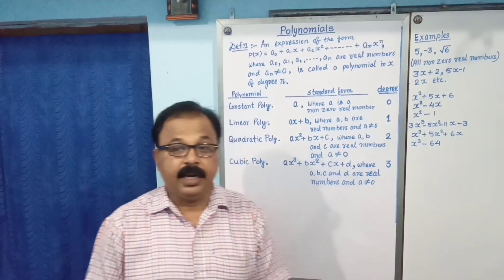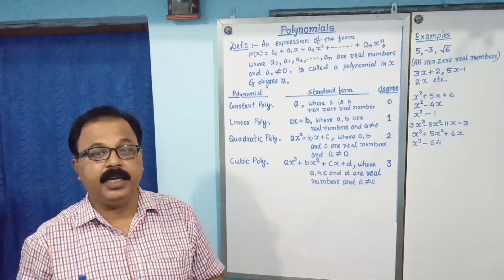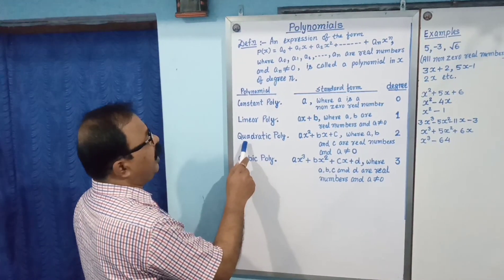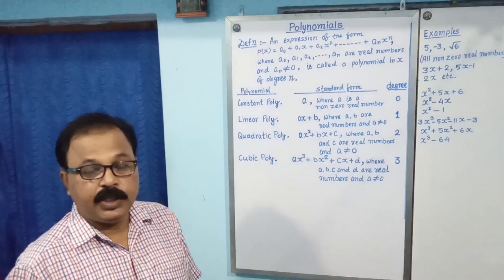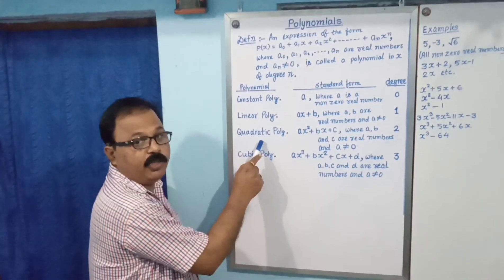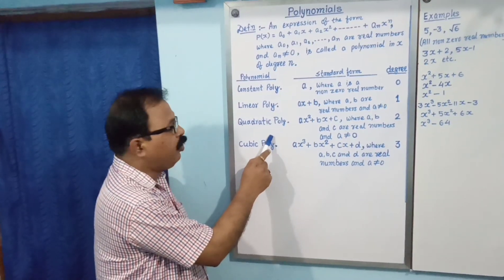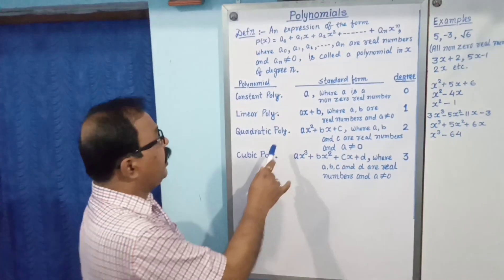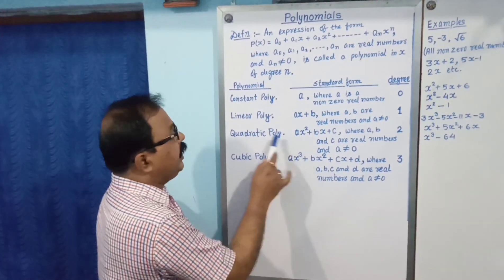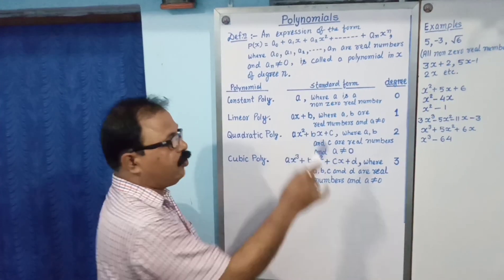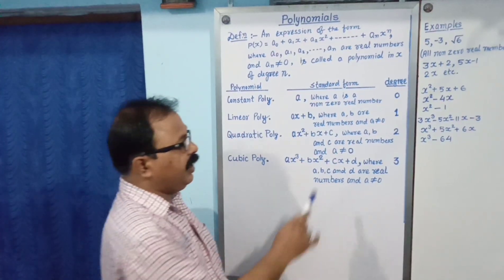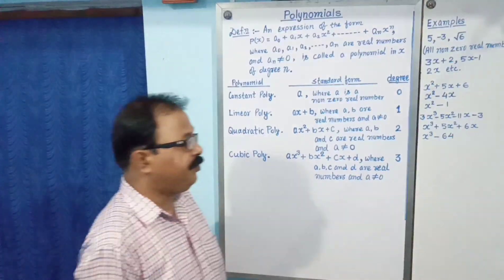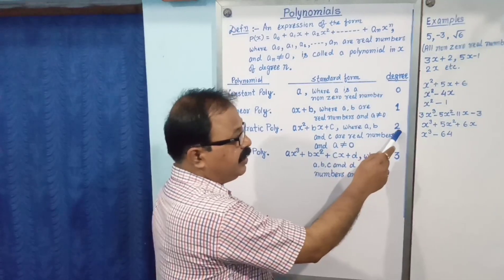What is degree of polynomial? The highest degree of a polynomial is called degree of polynomial. Another polynomial, quadratic polynomial. You have to study that type of polynomial. Quadratic polynomial and cubic polynomial in class 10th. So, carefully, its standard form where A, B and C are real numbers, and A not equal to 0, and its degree is 2.